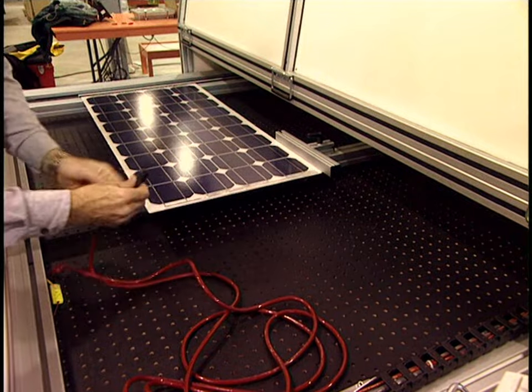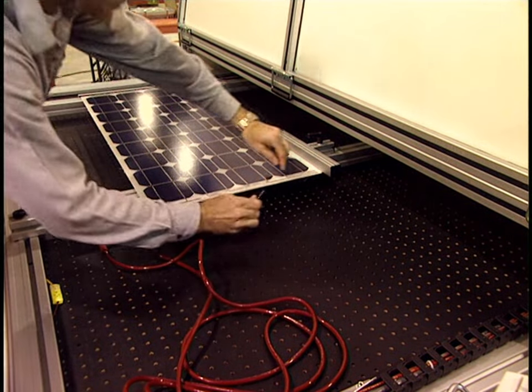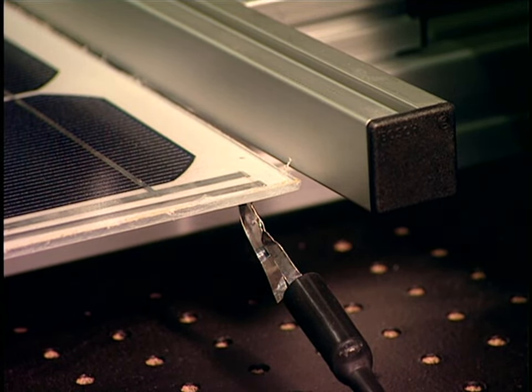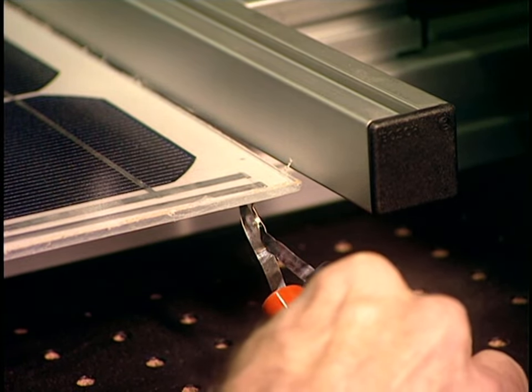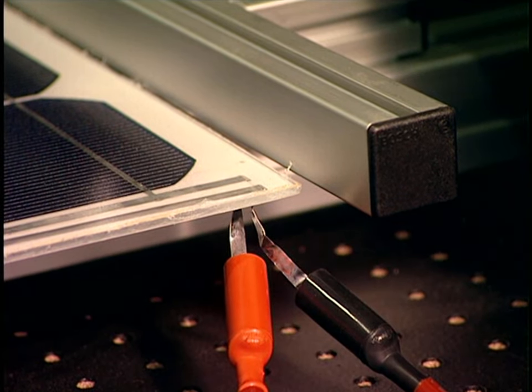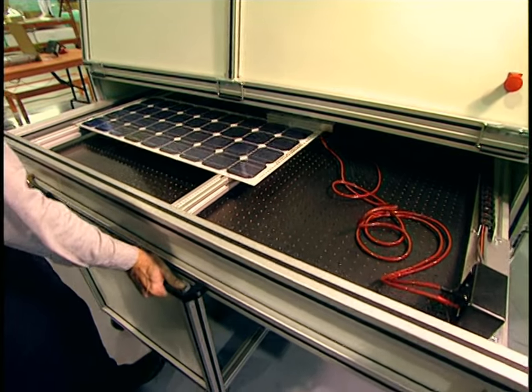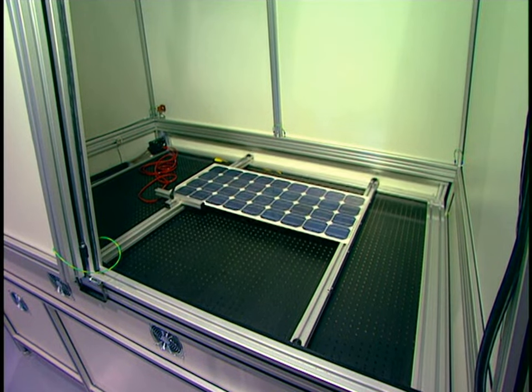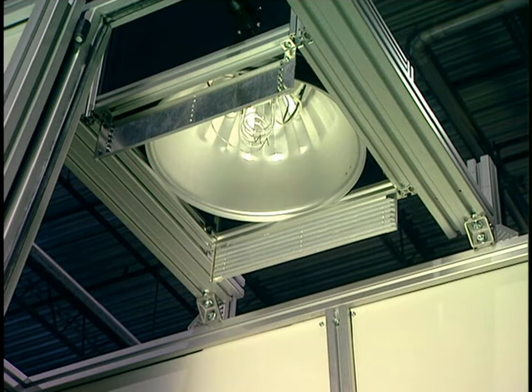Negative and positive contacts of the solar panel are connected to a voltmeter. The panel is inserted into the simulator and a powerful lamp will illuminate it. The voltmeter is read to make sure that panels supply the electric current required.